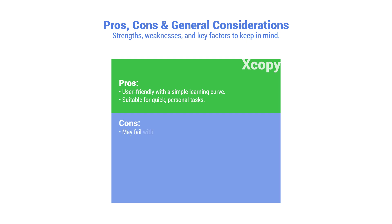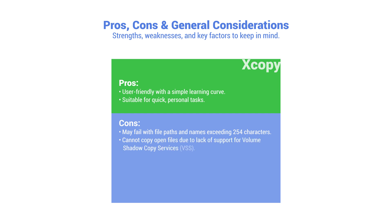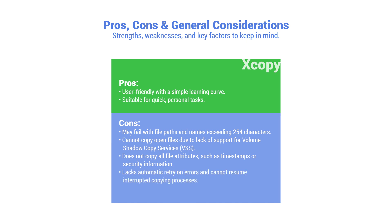Cons: May fail with file paths and names exceeding 254 characters. Cannot copy open files due to lack of support for volume shadow copy services. Does not copy all file attributes, such as timestamps or security information. Lacks automatic retry on errors and cannot resume interrupted copying processes.